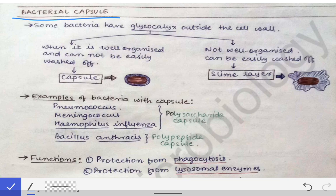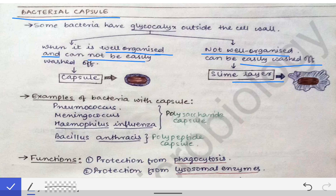Some bacteria have a glycocalyx compound surrounding their cell wall. That glycocalyx layer surrounding the cell wall may be arranged in a well-organized way or may not — it may be haphazard. When it is haphazard, it can be easily washed off, and in that case the glycocalyx layer outside the bacterial cell wall is called the slime layer.